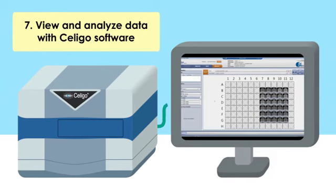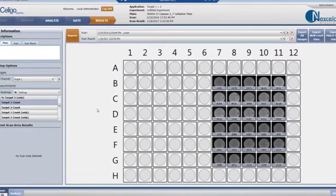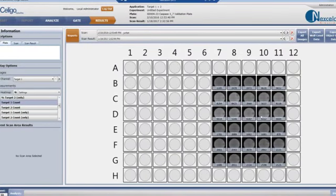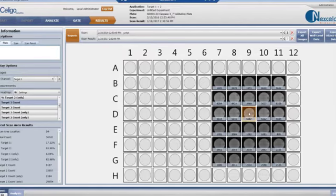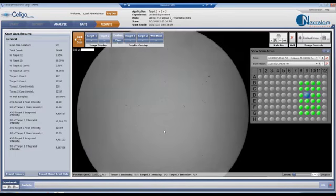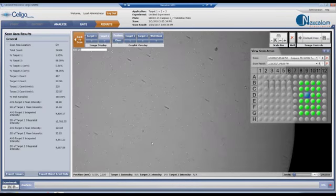The analyzed results are displayed in a plate-based format showing a thumbnail picture and the number of apoptotic cells for each analyzed well. Let's take a closer look at a treated sample in well D9. By double-clicking on the well, the whole well image appears for review.